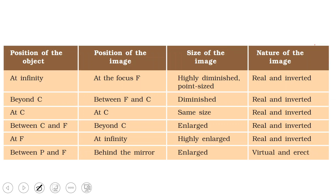To summarize the six positions for a concave mirror: object at infinity gives a real, inverted, highly diminished point-size image at the focus. Object beyond C gives a real, inverted, diminished image between F and C. Object at C gives a real, inverted, same-size image at C. Object between C and F gives a real, inverted, enlarged image beyond C. Object at F gives a real, inverted, highly enlarged image at infinity. Object between F and P gives a virtual, erect, enlarged image behind the mirror.